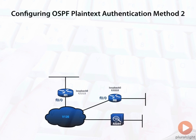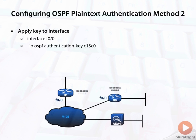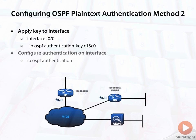The second method is on a per-interface basis. We still apply the key to the interface just as in the previous example, but this time we also configure authentication on the interface itself using the ip ospf authentication command. We don't have to go into the routing process. Just do this on a per-interface basis, make sure to do it on the other side with the same key, and we're good to go.